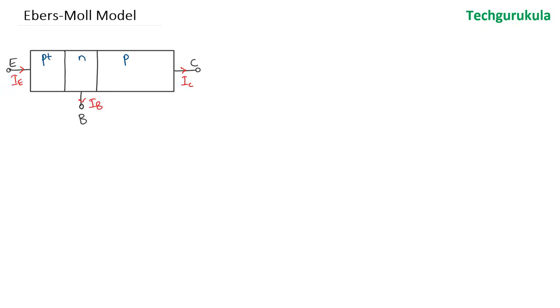In this video we are going to see a very small model of a BJT. To start with, let me take the PNP BJT that we have been seeing all along the course. The question is: can we model this PNP transistor in a simple model so that it represents this BJT in terms of a large signal model?